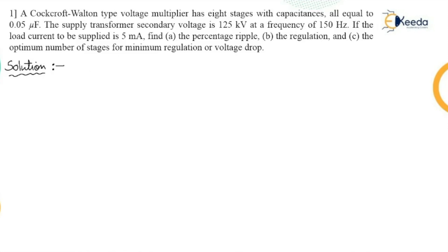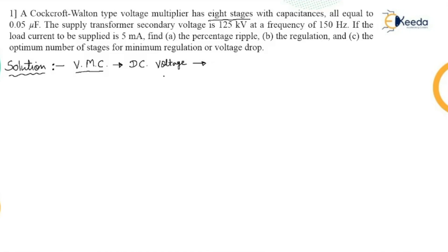This numerical goes like this: a Cockcroft-Walton type voltage multiplier circuit. This is a numerical on the voltage multiplier circuit where it develops DC voltage. The voltage multiplier circuit is the last circuit after the cascaded voltage doubler circuit, named the Cockcroft-Walton voltage multiplier circuit. It has a number of stages, and in this case the number of stages given is eight, so N equals 8.